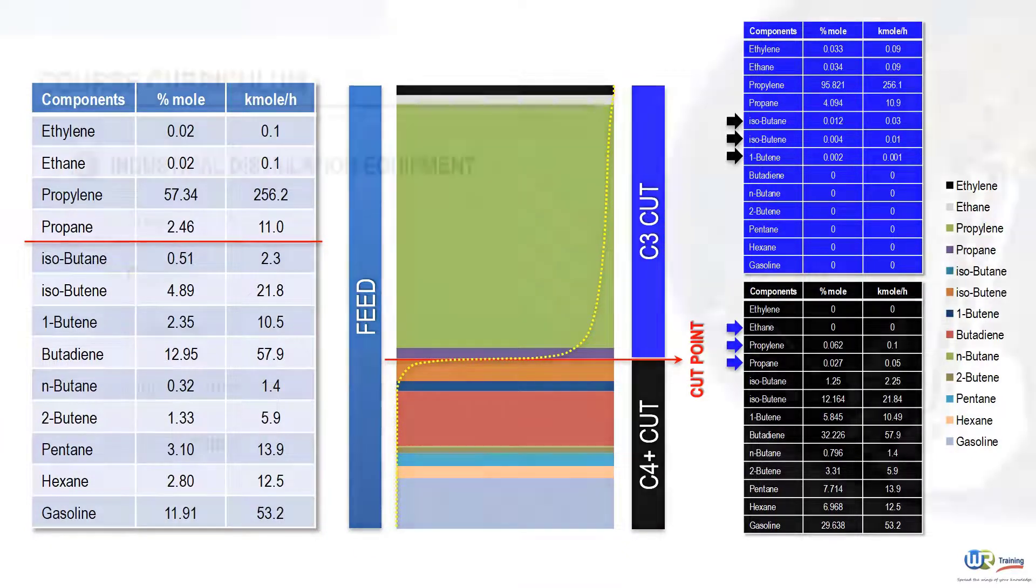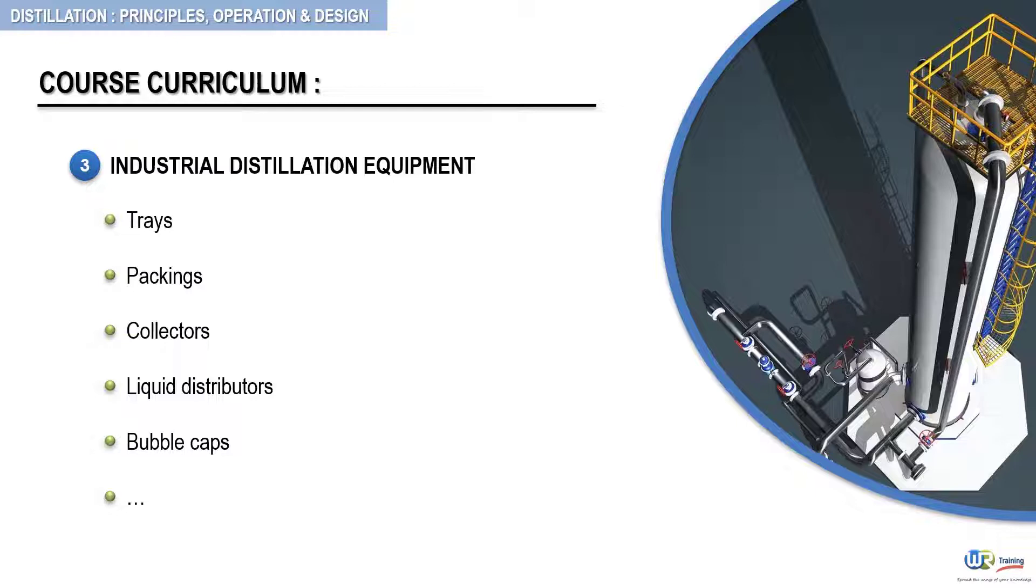In the third section, we shift our attention to the distillation equipment. We will present each major component, starting with the column trays, state their function, their operating limits, and discuss the problems that can occur.